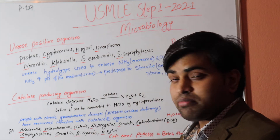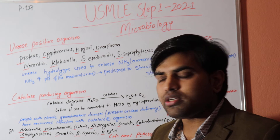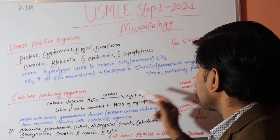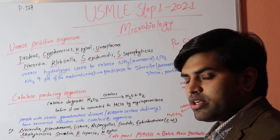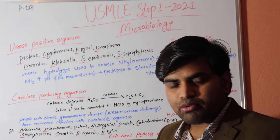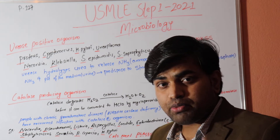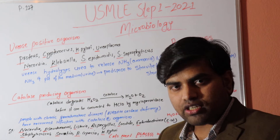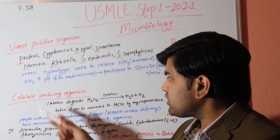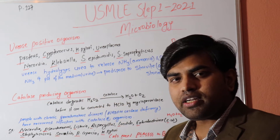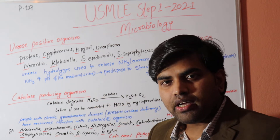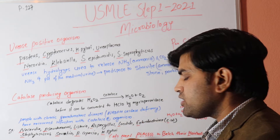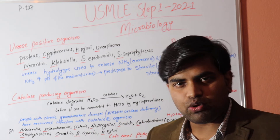The first topic is urease-positive organisms, which are responsible for the formation of struvite stones — ammonium magnesium phosphate stones. The second topic is catalase-producing organisms, which are commonly associated with recurrent infections in chronic granulomatous disease.